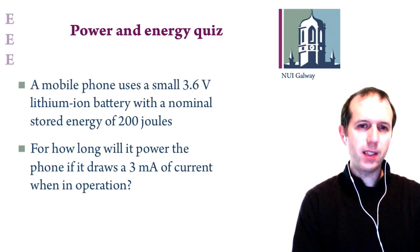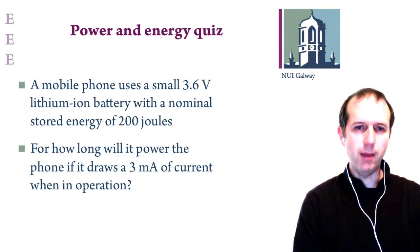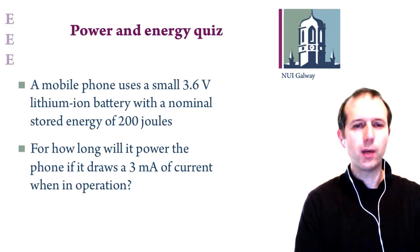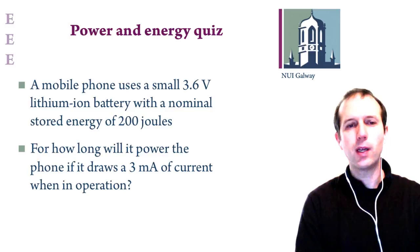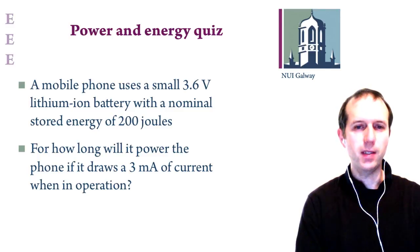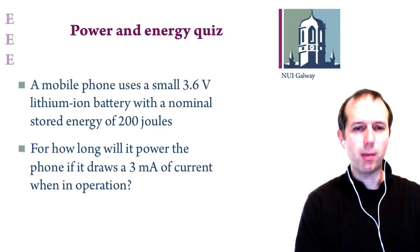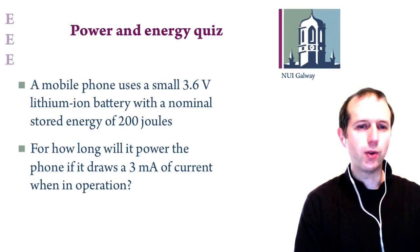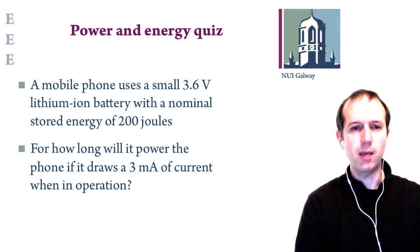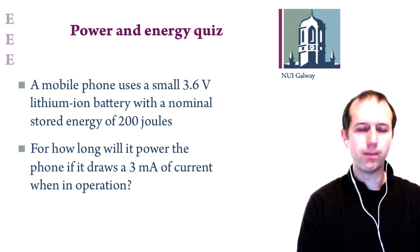Take a battery with a voltage of 3.6 volts and a stored energy of 200 joules. Our question is: how long will this battery power a phone if it draws 3 milliamps of current during operation? It's drawing quite a small amount of current and we want to know how many minutes, seconds, or hours it will last — perhaps in standby mode or some basic operation.